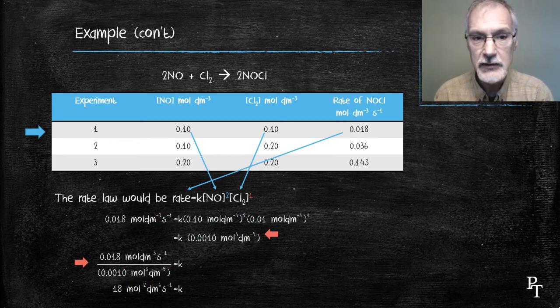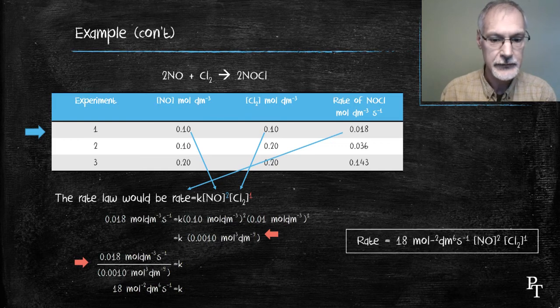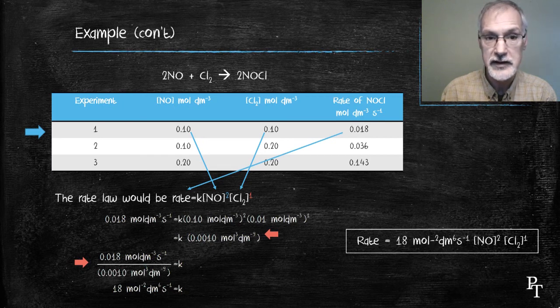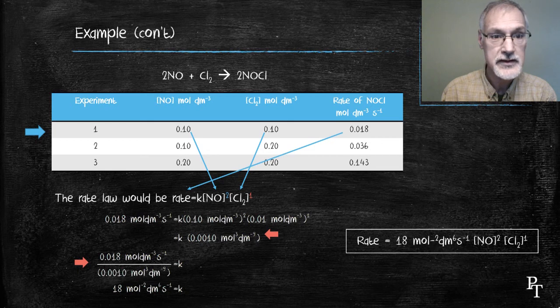Anyway, here now is my final expression for the rate of this reaction. This expression now allows me to take any concentration of nitrogen oxide or chlorine, provided they're at the same temperature as my experiment, and thereby predict what the rate of the reaction will be in new circumstances.